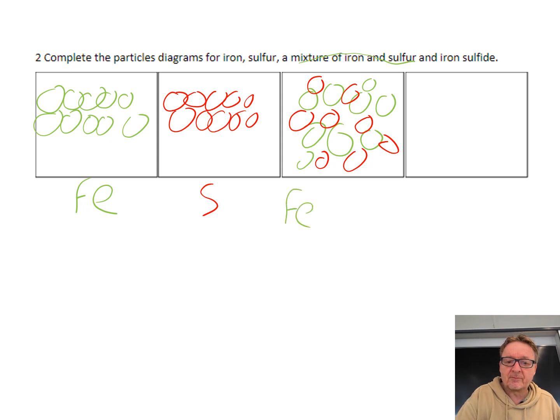What you could do theoretically is get a magnet, and all the green bits would come out and stick to the magnet, leaving the sulfur behind.